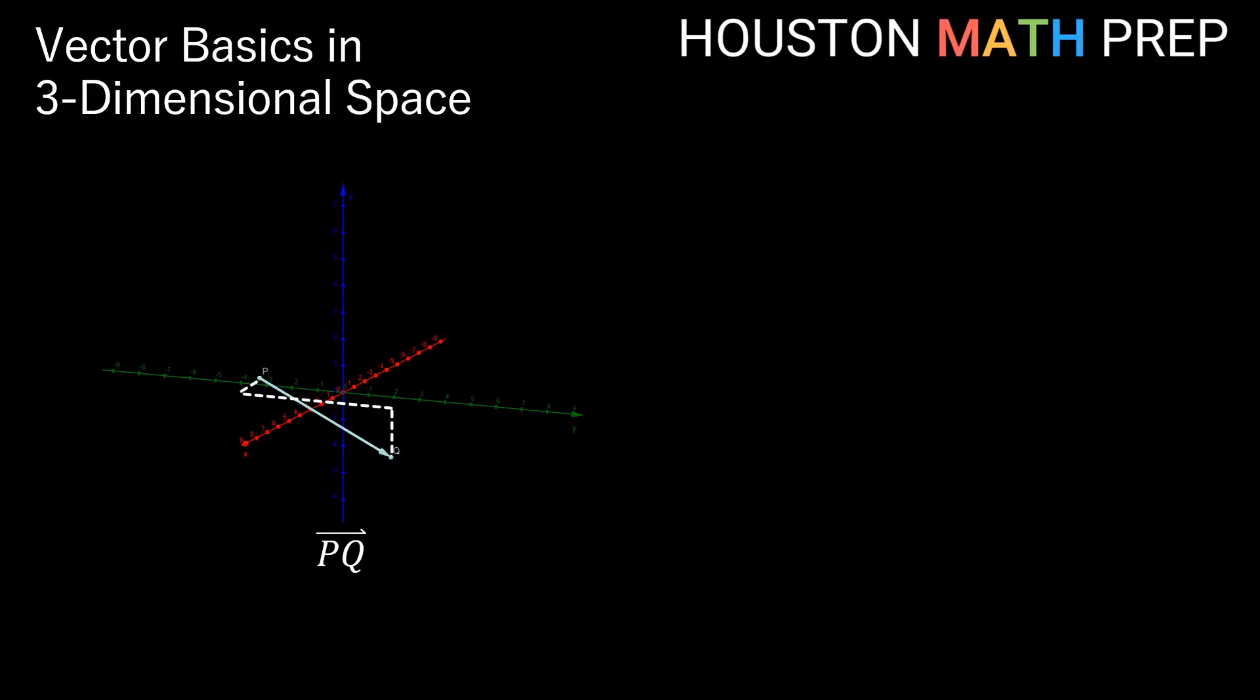Sometimes instead of naming a vector just a single letter like v or w, we'll be a little more descriptive and we'll call the vector something like PQ, as we have here. If we have the vector notation over PQ, this tells us that our vector starts at point P and ends at point Q in space. In this case my vector traveling from P to Q, if you can kind of see from my picture, it goes two units in the x direction, six units in the y, and down two units in the z direction. So my vector PQ here is actually 2, 6, negative 2.